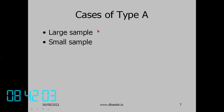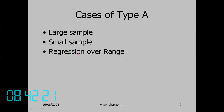We will see different cases: starting with a large sample, then extending to a small sample, and then applying regression over a range. Regression applies when an instrument used over a range is calibrated. In the lab, experiments like calibration of pressure gauge, stress-strain, calibration of dial gauge, and calibration of thermocouple involve regression. The autocollimator experiment also involves regression for computing straightness error.